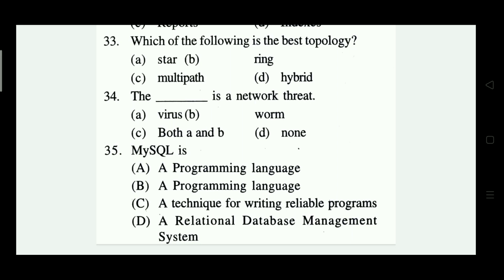Which of the following is a network threat? Options: virus, worm, both A and B. The right answer is both A and B — virus and worm are both network threats.